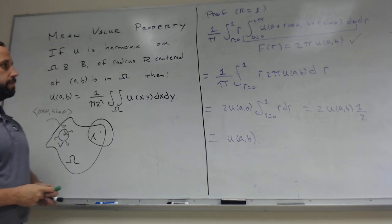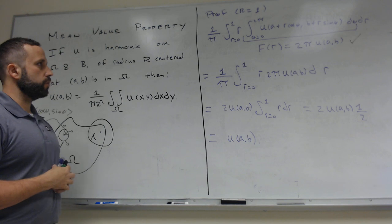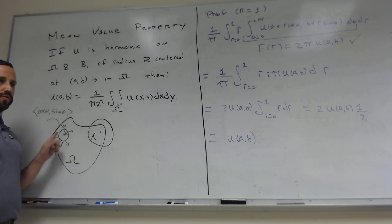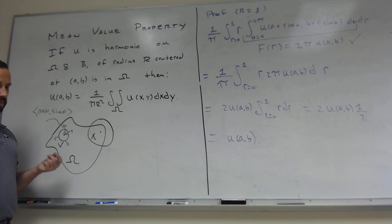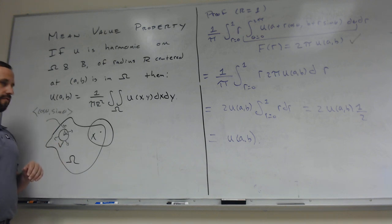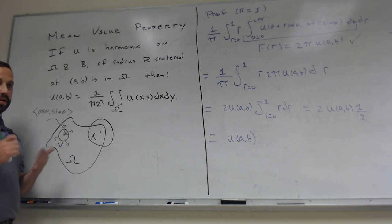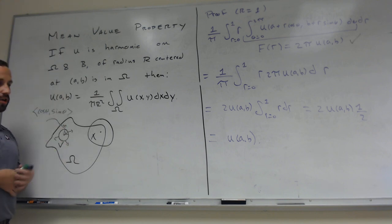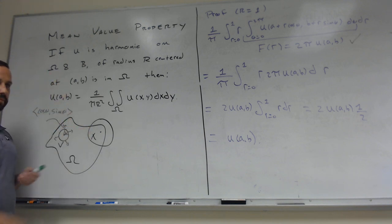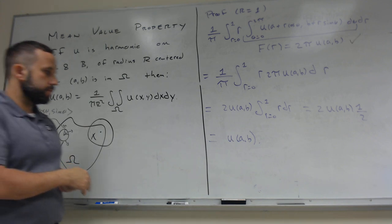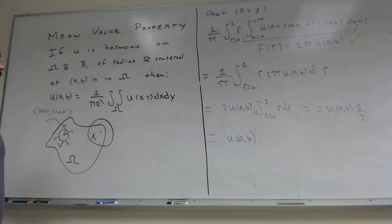So U satisfies this mean value property. It's critical that U be harmonic so that the Laplacian integral equals zero. There's a question on the homework where you show the converse: if U satisfies the mean value property on every ball, then it's harmonic. Basically you do this proof in reverse — if the Laplacian of U is not zero, then F'(r) is not zero, and F(r) is not constant, so the mean value property fails.